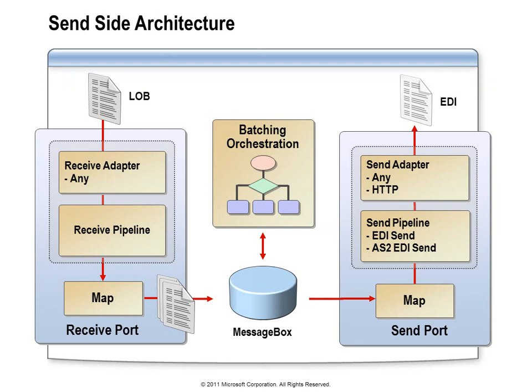You can see here in the diagram that on the receiving side, we could be receiving any kind of messages — they may or may not be EDI messages, they may just be XML documents or flat files that we receive — and they get published into the message box. At that point, they may simply be routed to a send port where we'll have a send pipeline that does the EDI processing, takes that XML document and serializes it out as an EDI document with all the appropriate values and protocol settings, and then we send it out through any particular adapter.